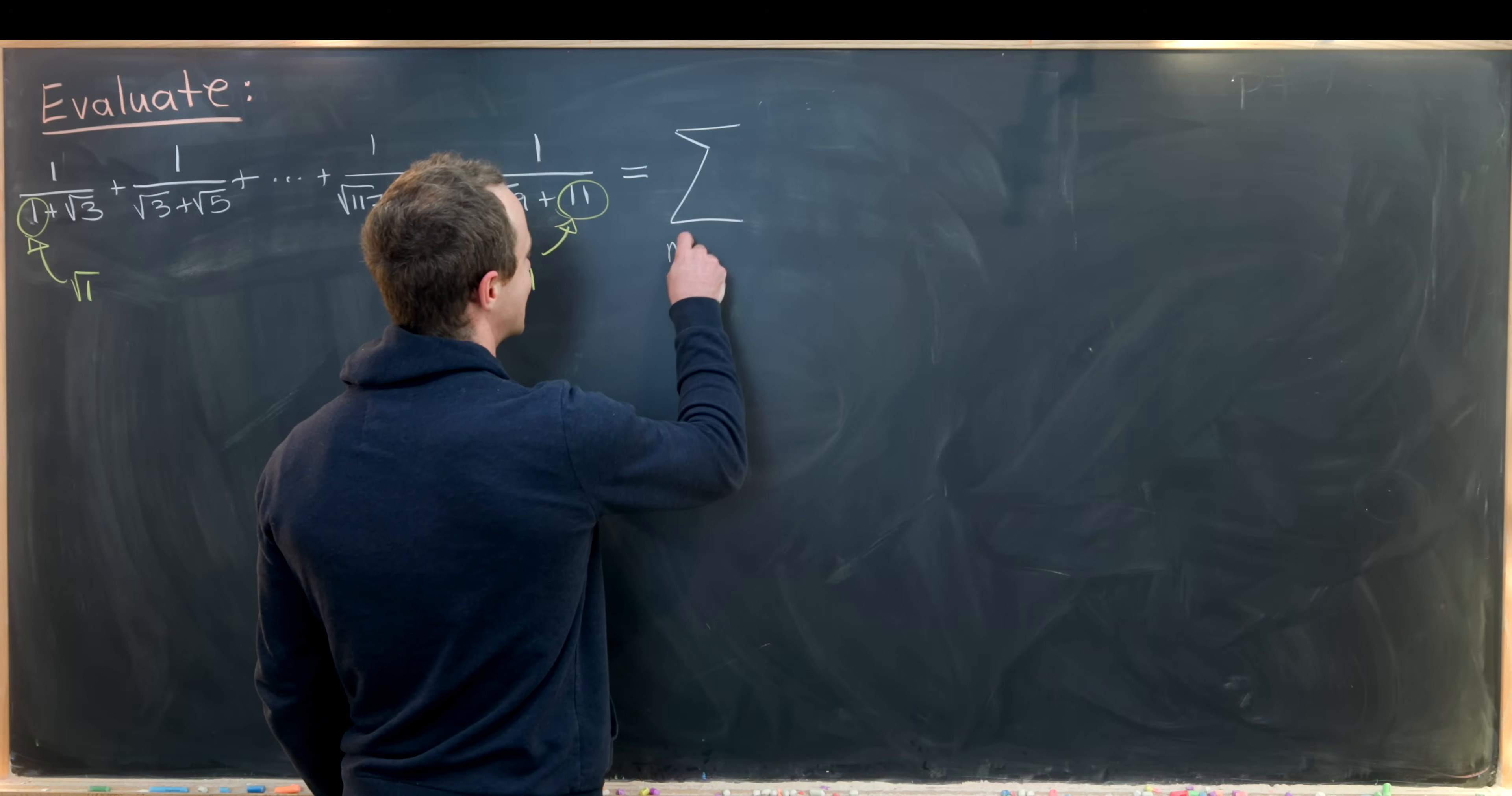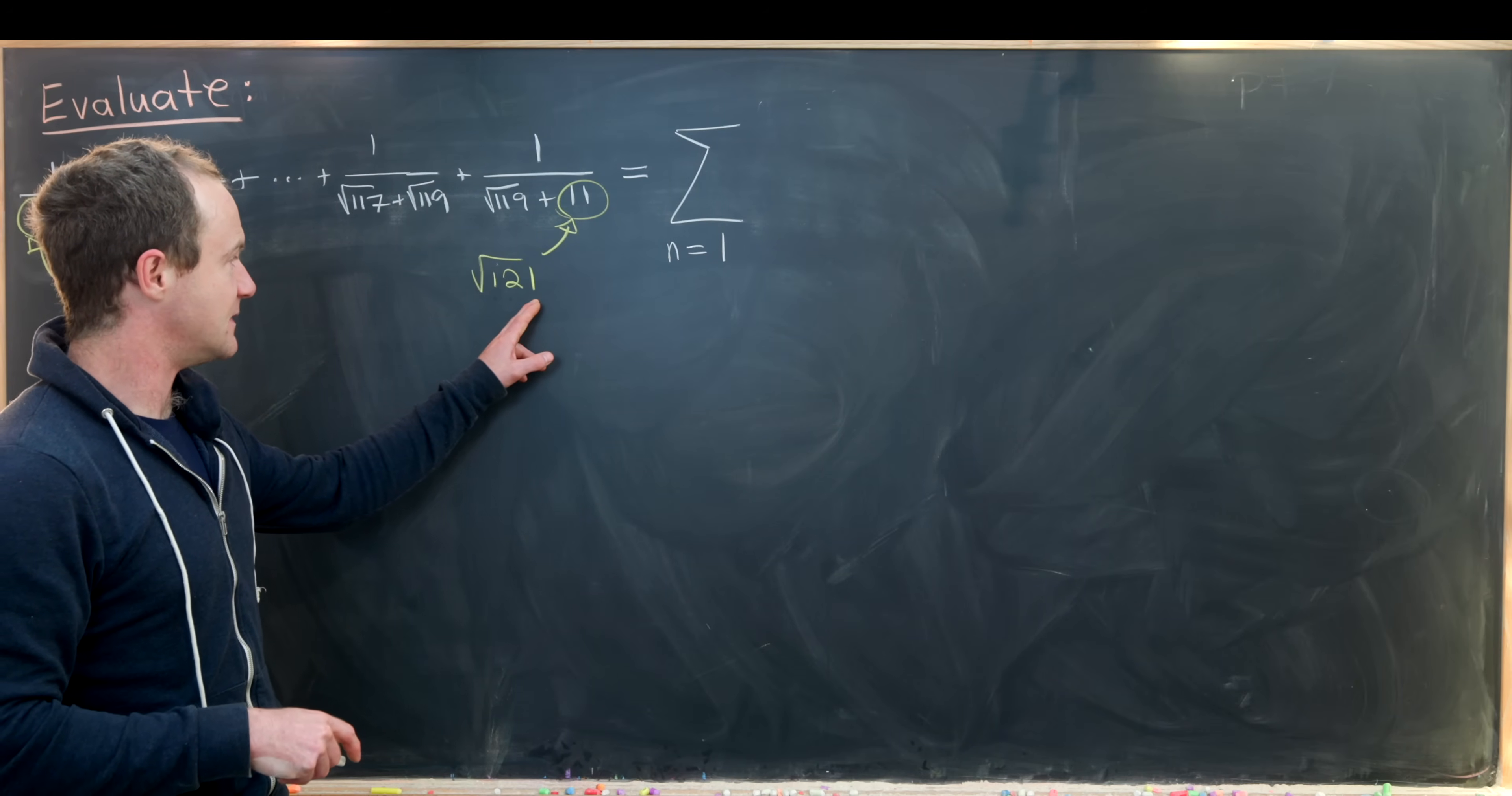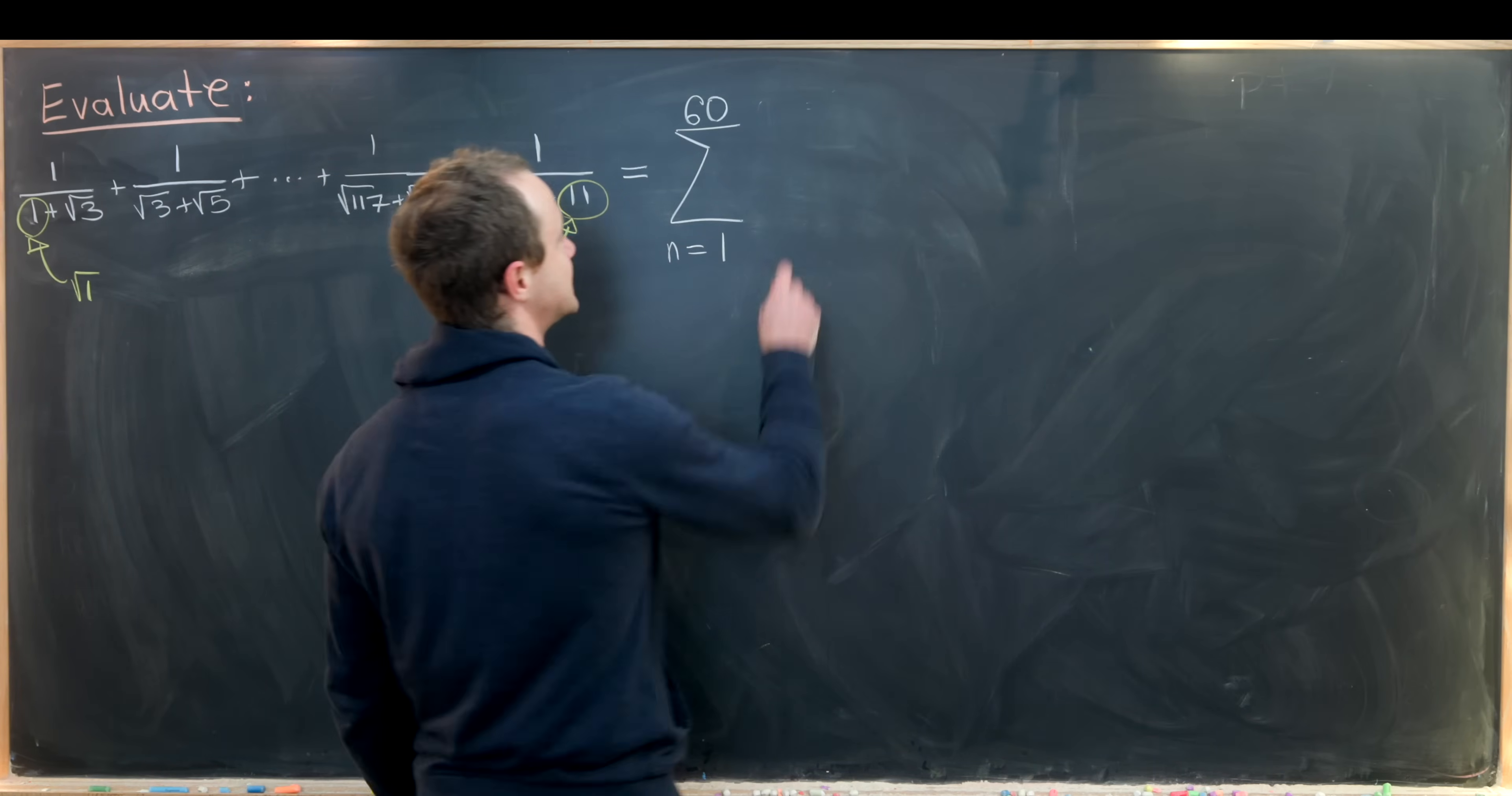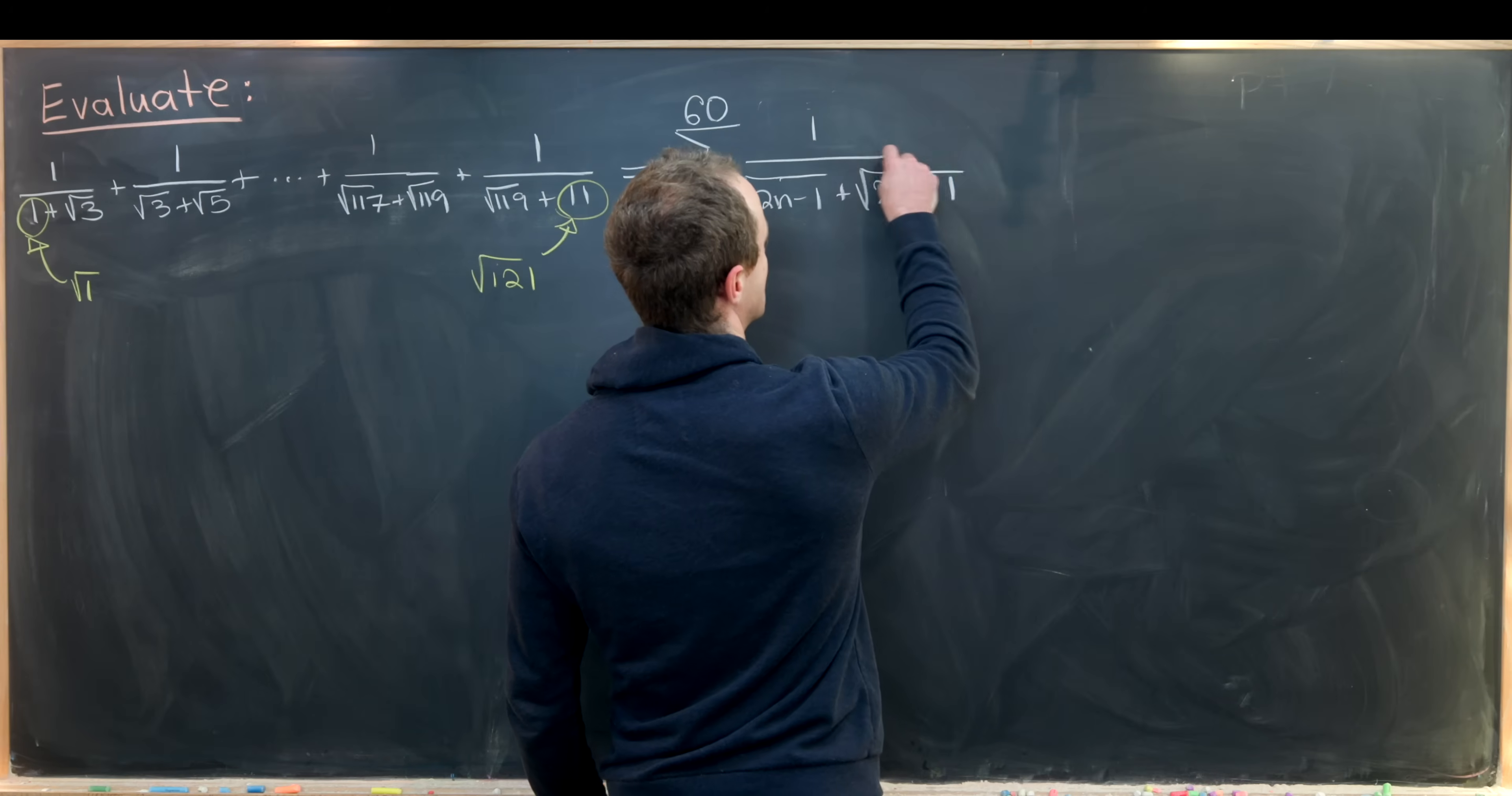If we want this to be of the form 2n + 1, then we need n to equal 60. So we have the sum as n goes from 1 to 60 of 1/(√(2n-1) + √(2n+1)).